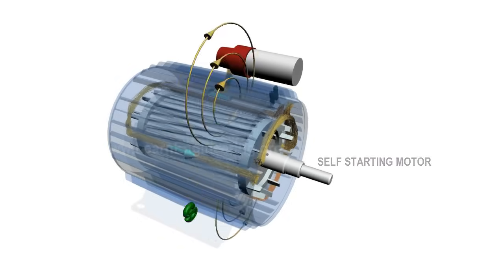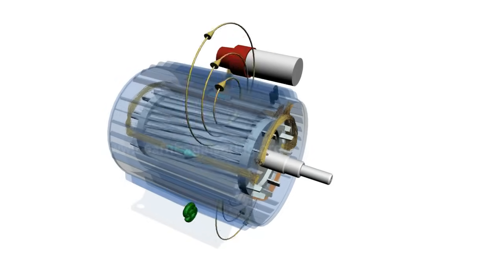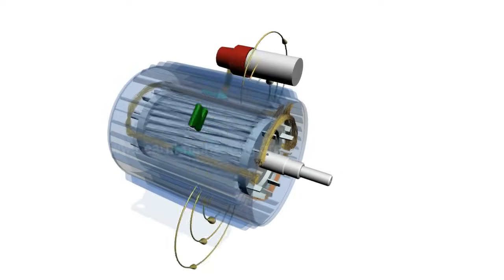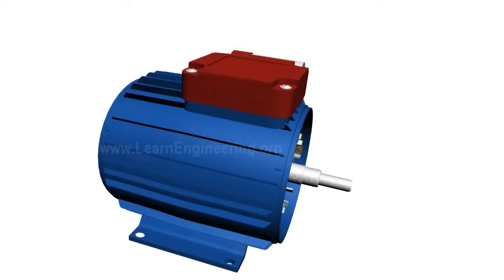After the rotor has attained a specific speed, even if you cut the auxiliary winding, it will keep on rotating as explained earlier. This cutting action is done through a centrifugal switch.